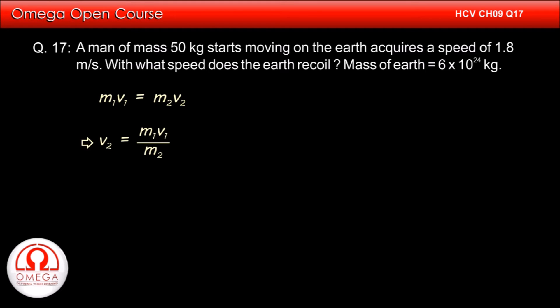This implies v2 is equal to m1 v1 divided by m2. Putting the values, we get v2 is equal to 50 into 1.8 divided by 6 into 10 to the power 24. Simplifying, we get v2 is equal to 1.5 into 10 to the power minus 23 meter per second.